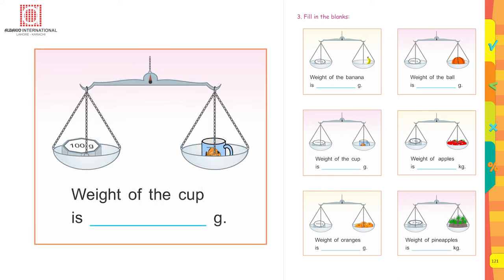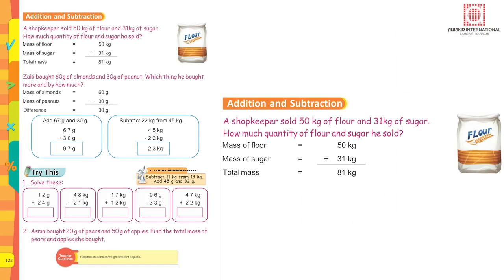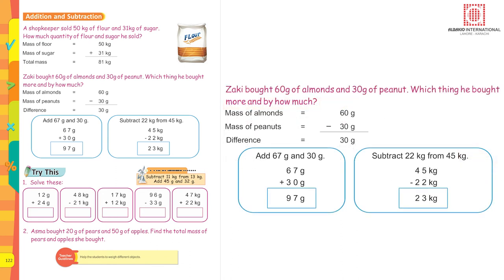Addition and subtraction: A shopkeeper sold 50 kg of flour and 31 kg of sugar. How much flour and sugar did he sell altogether? Mass of flour is 50 kg, mass of sugar is 31 kg. Adding them: 0 plus 1 is 1, and 5 plus 3 is 8, so the total mass is 81 kg.